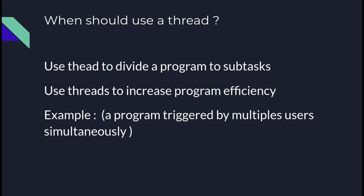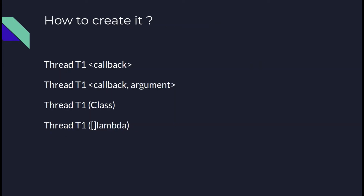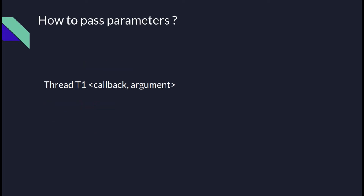How to create threads? You can create threads using different syntax: a callback function, a callback with arguments, a class, or a lambda function. Lambda and class were covered in different courses on this channel, so refer to those if you want to understand those concepts. You can also pass parameters to a thread — for example, a function that you want executed with specific arguments.